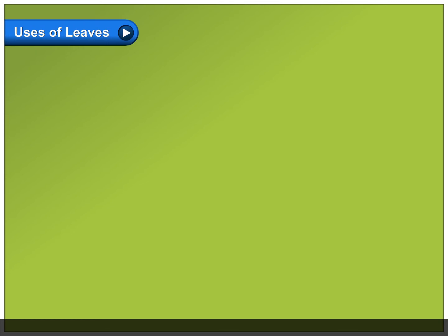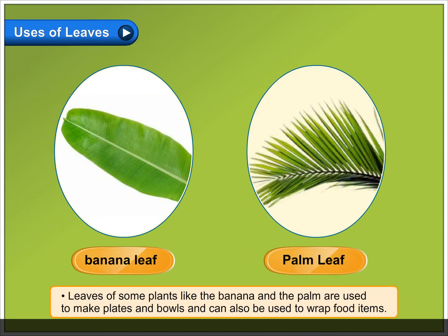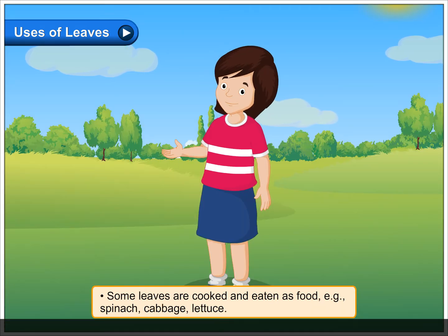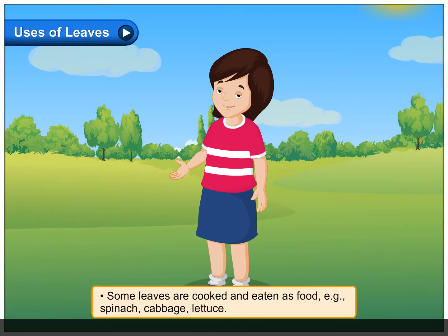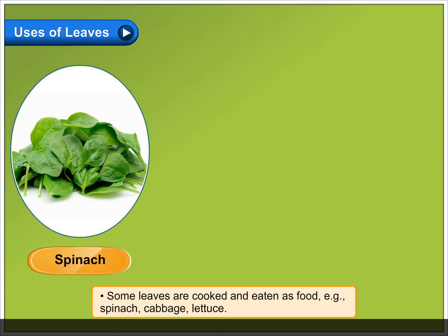Uses of leaves. Leaves of some plants, like the banana and the palm, are used to make plates and bowls, and can also be used to wrap food items. Some leaves are cooked and eaten as food, for example spinach.